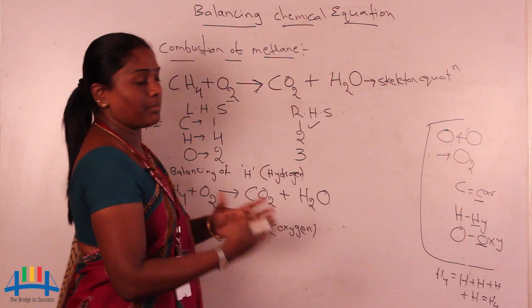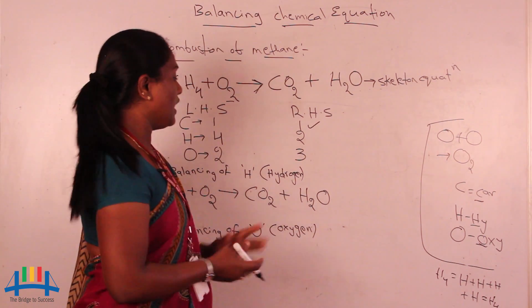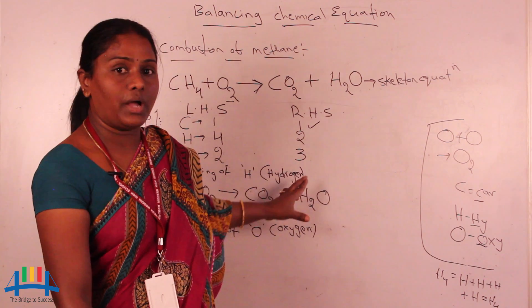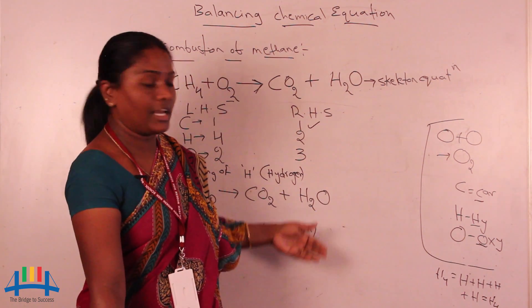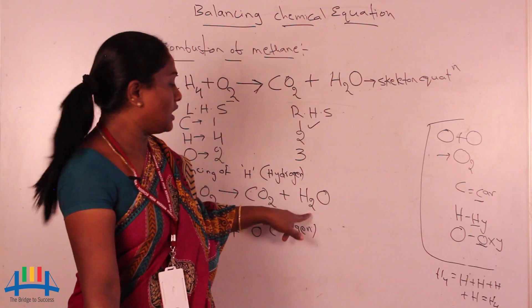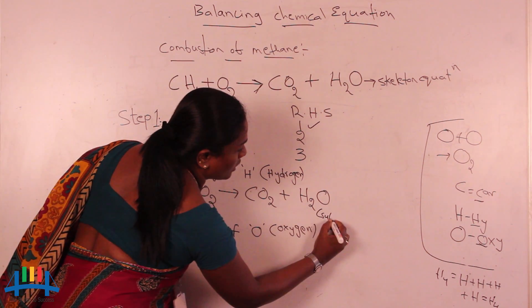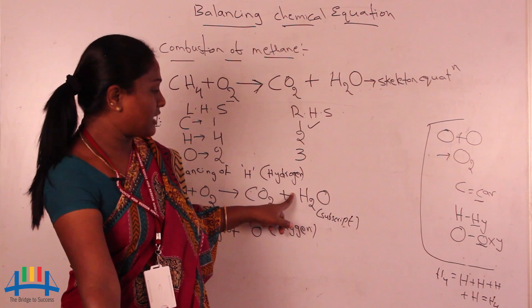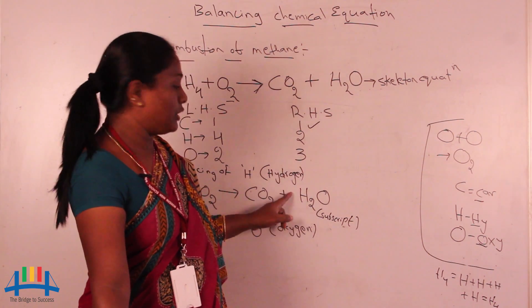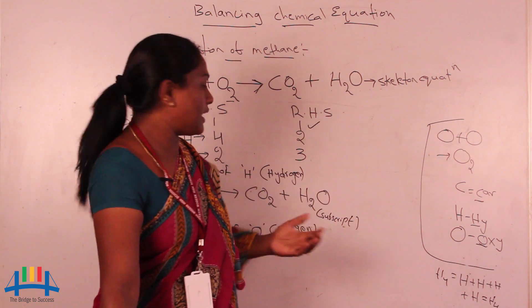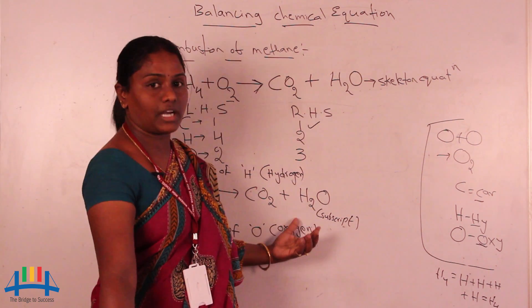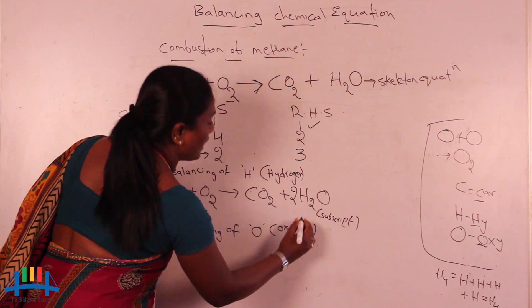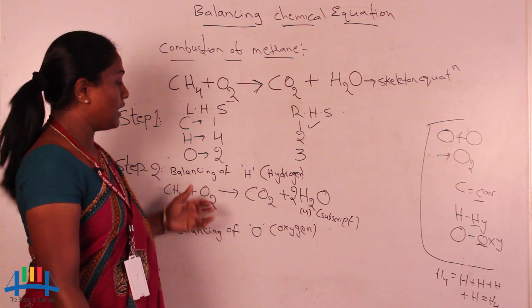Always remember while writing balancing equations, start multiplying from the number one and work upward. The number written in the formula below — in the subscript — is the subscript. So putting coefficient 2 before H2O gives 2×2 = 4 hydrogens on the right, which matches four on the left. Hydrogen is now balanced.